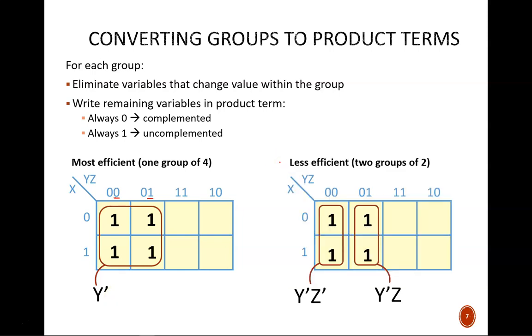In the less efficient example, there are two groups, and each group gets its own product term. In the leftmost group, X equals 0 up top, and X equals 1 down below. Therefore, X changes, and so it drops out. But in both squares, Y equals 0, so Y' becomes part of the product term. In total, the term is Y'Z'.